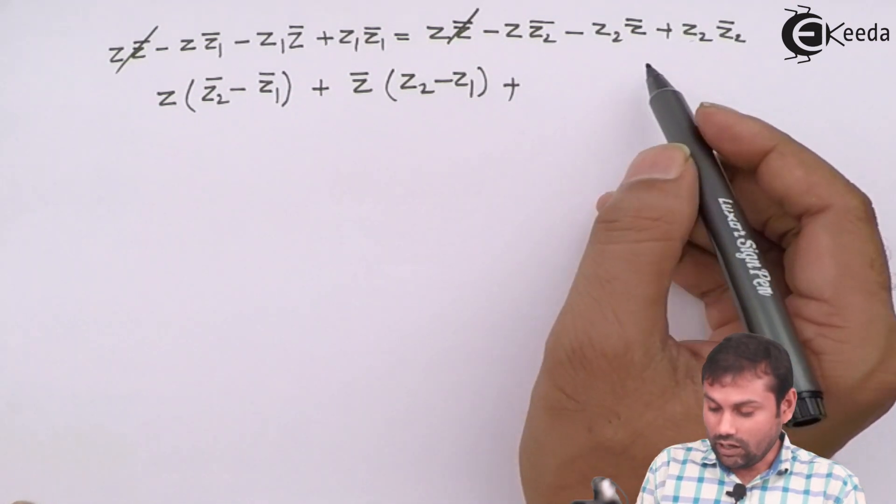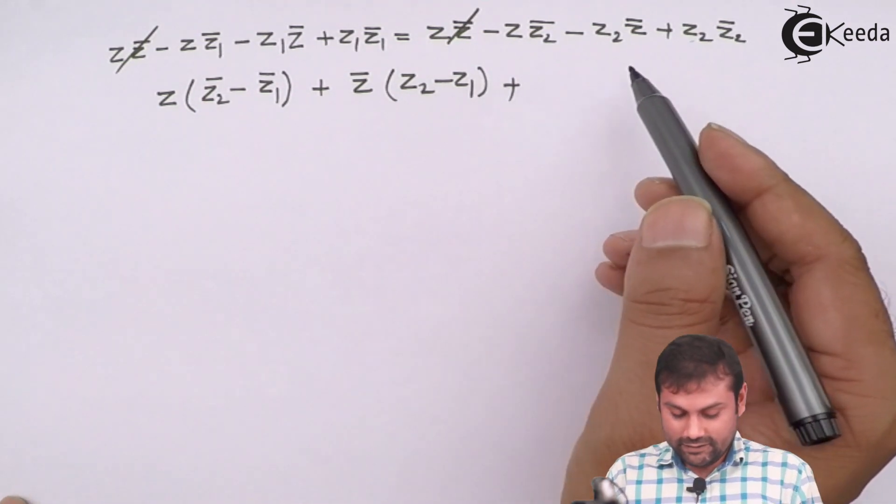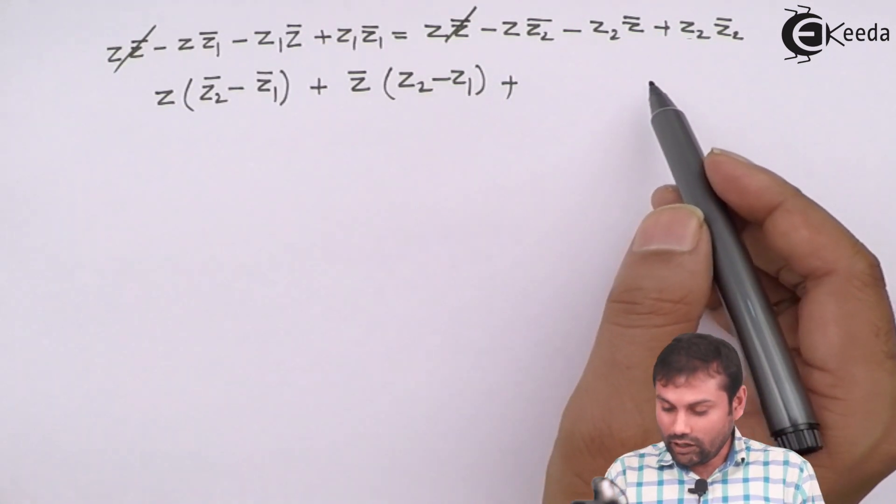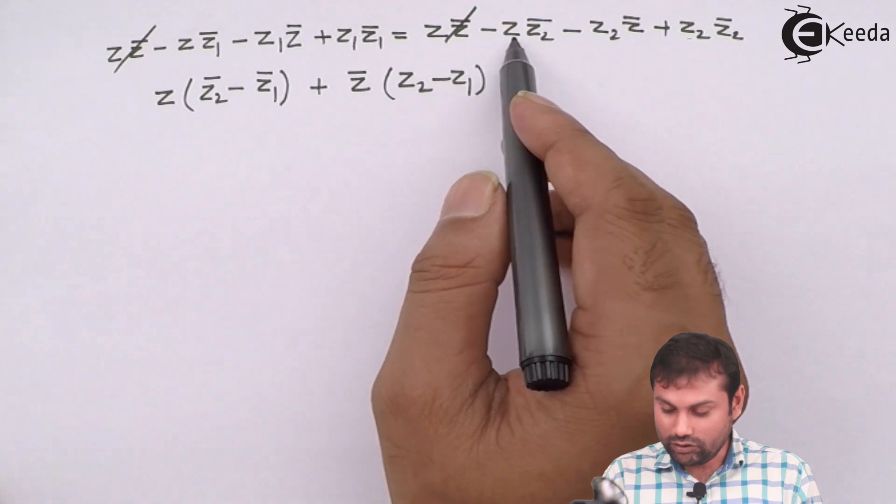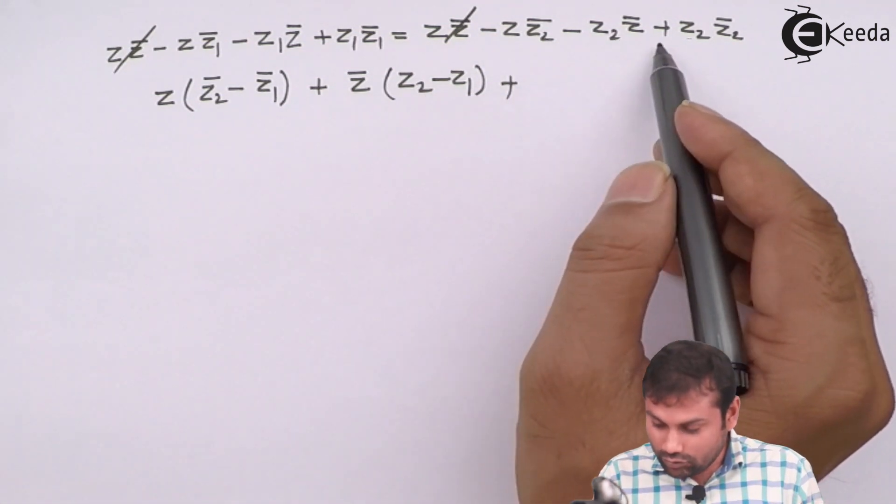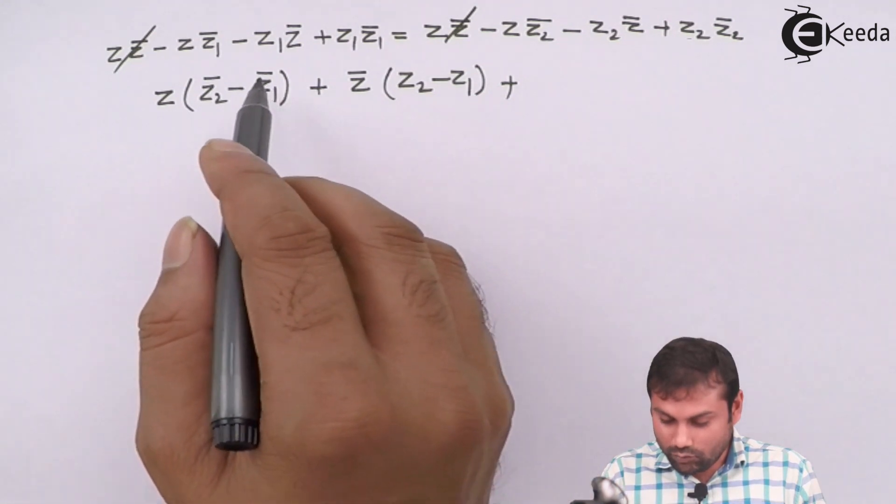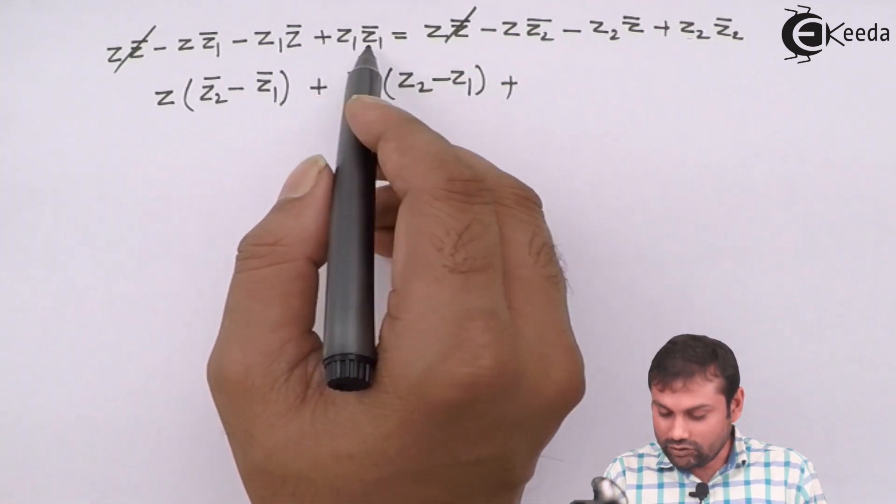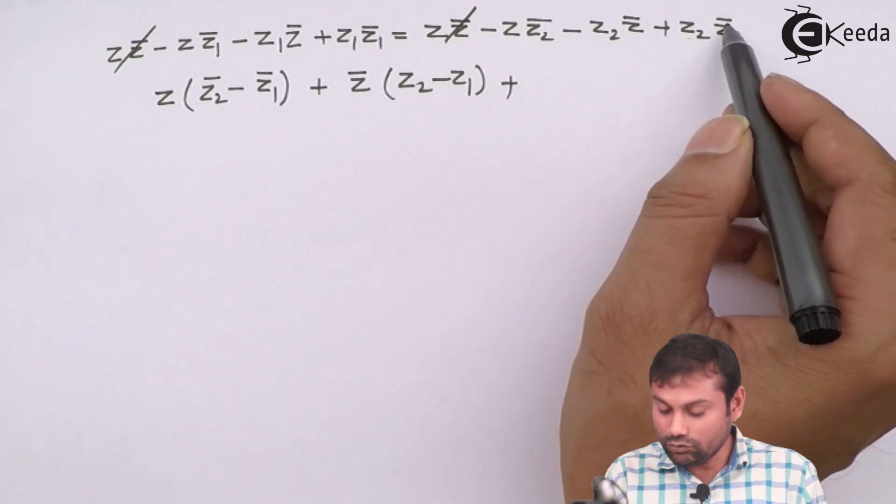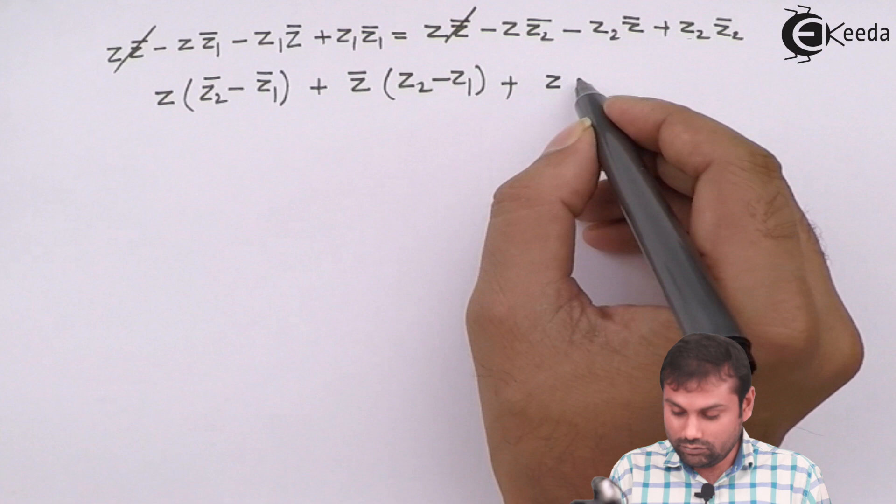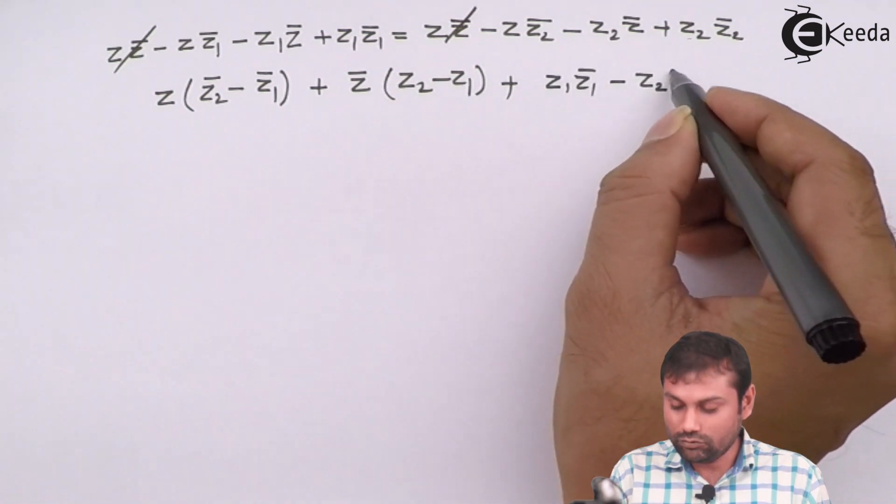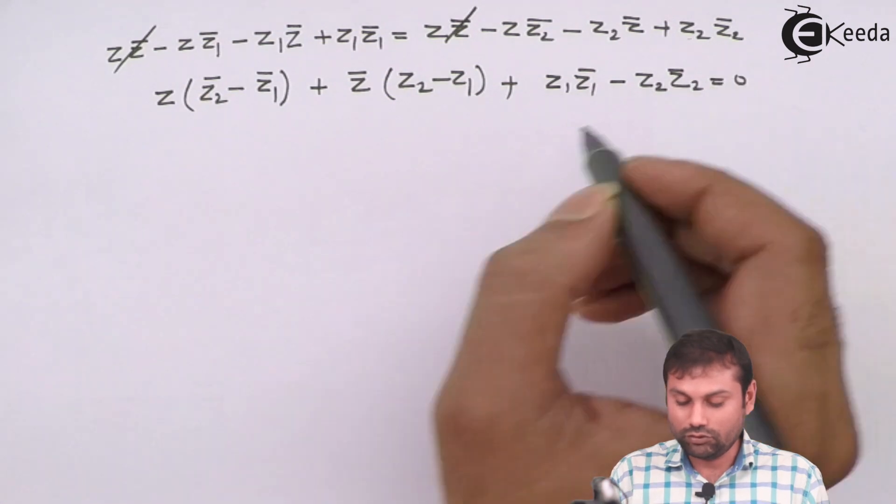Plus, you can see here that Z1 Z bar and this one Z Z2 we have used. So what is left here? This one Z1 Z1 bar and Z2 Z2 bar. So that would be Z1 Z1 bar minus Z2 Z2 bar equals to 0.